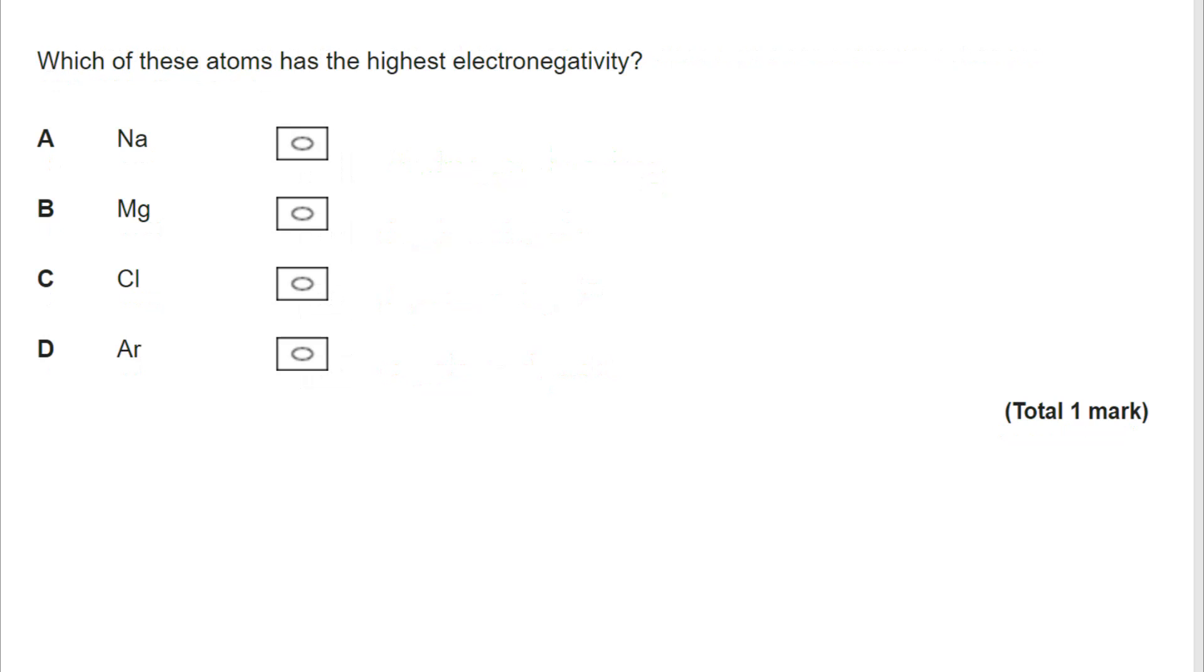This is a relatively straightforward question, checking whether you understand the trend in electronegativity across a period. And hopefully what you remember is that that is an increase. There is an increase in electronegativity across a period because there is an increased nuclear charge, but there is no increase in shielding. However, there is an error on this graph. Because argon does not have an electronegativity value. That's because electronegativity is the power of an atom to withdraw electron density towards itself from a covalent bond. And argon doesn't form covalent bonds. So for that reason, the correct answer is actually chlorine.